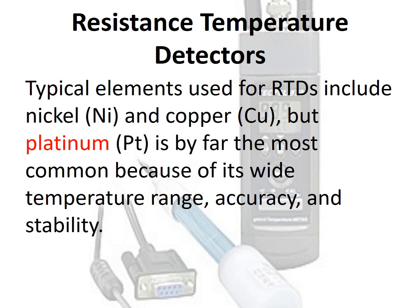Typical elements used for RTDs include nickel (Ni) and copper (Cu), but platinum (Pt) is by far the most common because of its wide temperature range, accuracy, and stability.